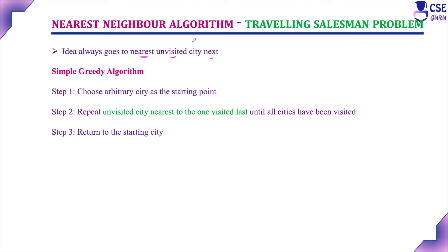If you are visiting the current city and a nearby city has not been visited, choose the nearest unvisited city next. This nearest neighbor algorithm implements a simple greedy technique. Step 1: choose an arbitrary city as the starting point — as in the traveling salesman problem, one city is considered the starting city. Step 2: repeat — visit the unvisited city nearest to the one visited last, until all cities have been visited.